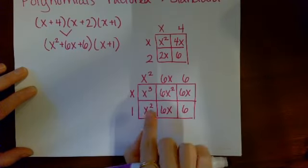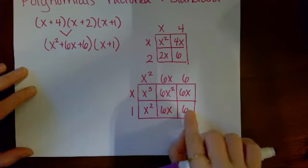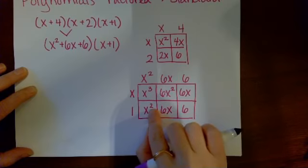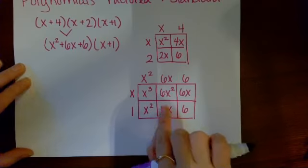Now we'll notice that again, the final answer will just be these terms simplified. I can see once again that I have two like terms here, six x squared and x squared. Two like terms here, six x and six x.